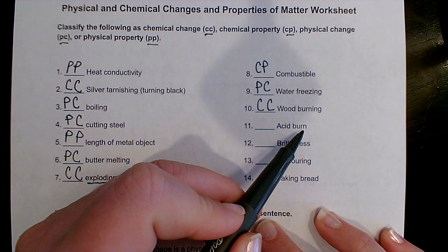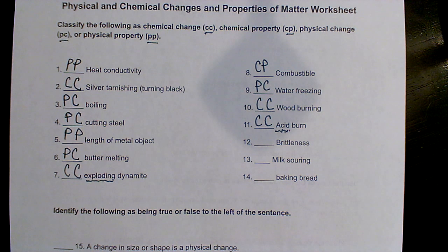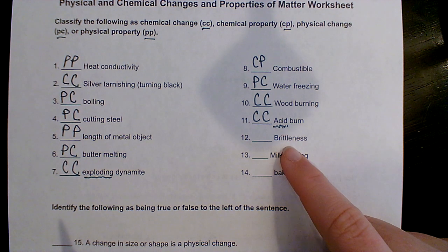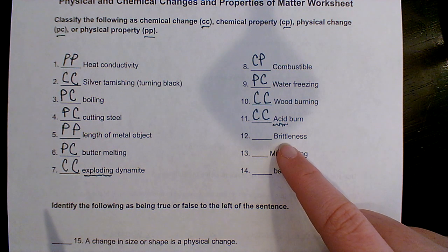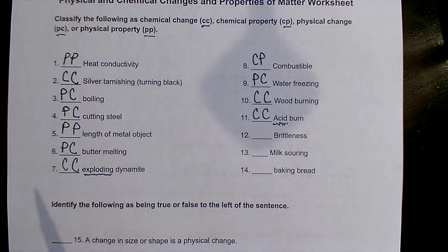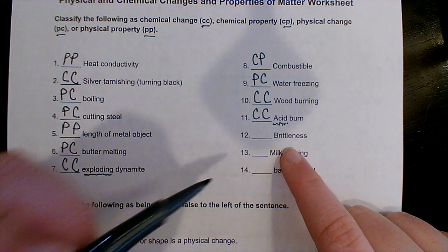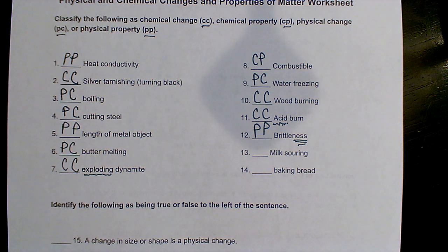Acid burn — usually any time you see acid, that's a dead giveaway that it's chemical, because acids are very reactive. Brittleness is how rigid something is, how likely it is to break if I try to bend it instead of bending. If I'm going to break something, I'm not going to change what it is — I'm just breaking it into smaller pieces. This is a property of how breakable something is, so that's a physical property.